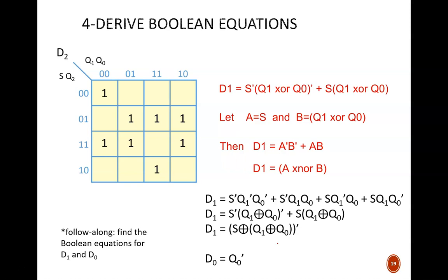This entire original equation can be achieved with just one gate: a three-input exclusive NOR. Another way of thinking of the same thing is to realize that exclusive NOR is the even function, so D1 will be true only when an even number of S, Q1, and Q0 are true.